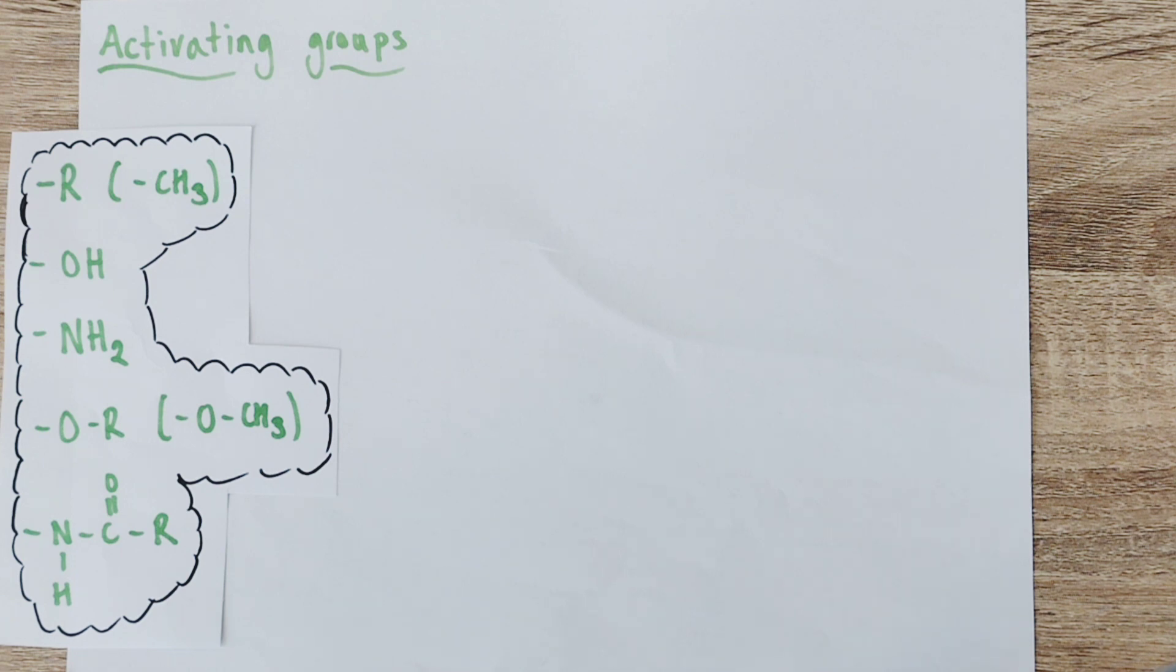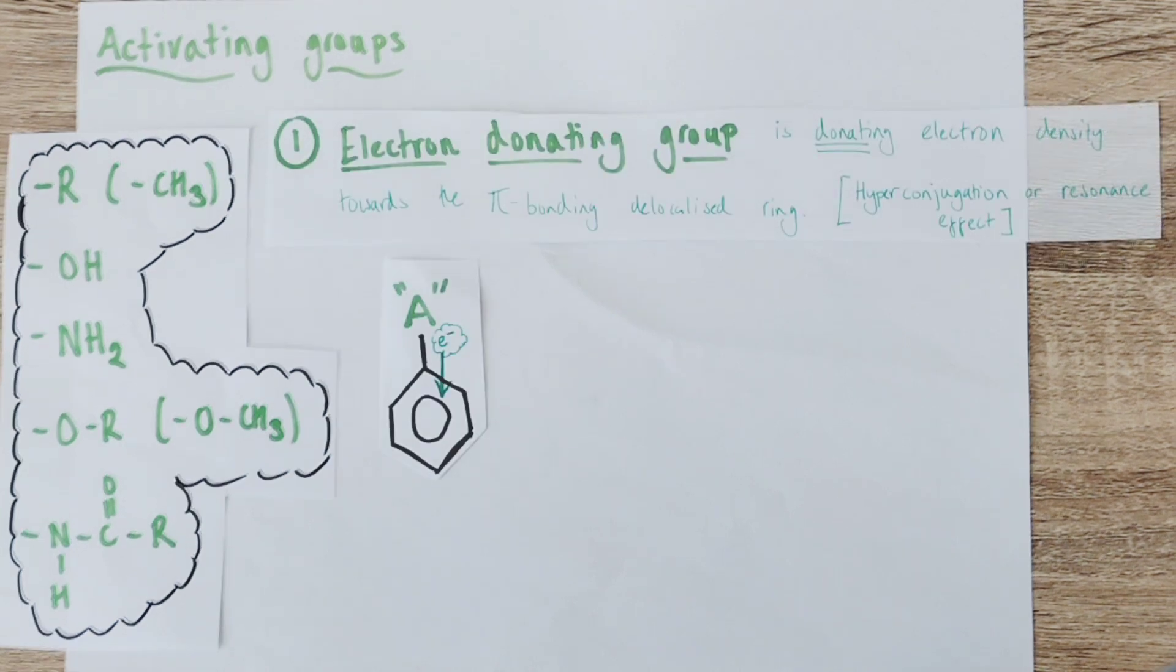First of all, activating groups. These tend to be groups that will speed up the rate of electrophilic substitution reactions. And here I have a list of some of those activating groups you might want to know.